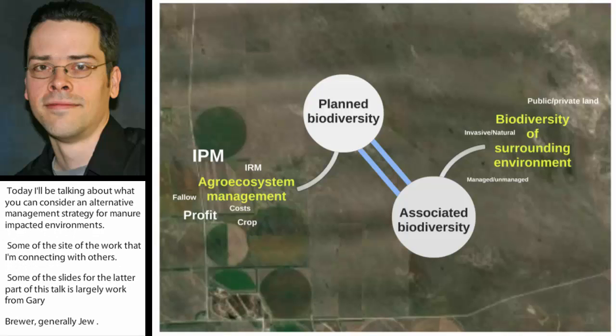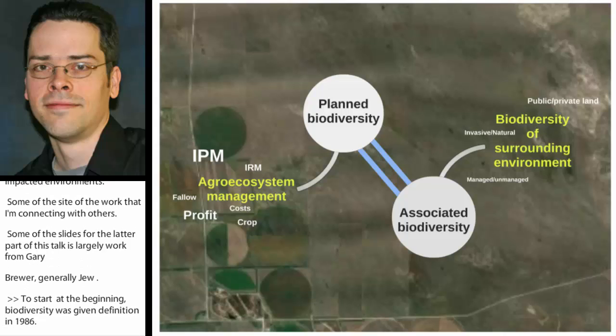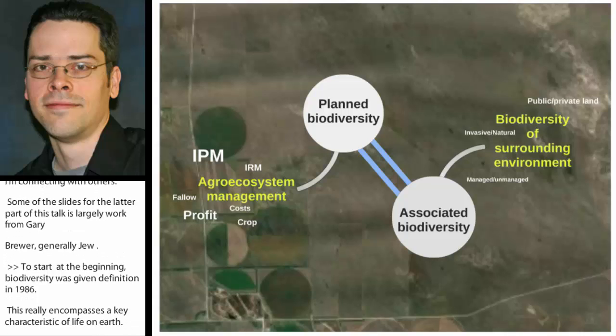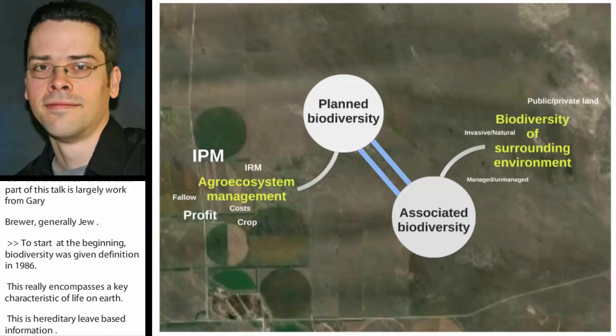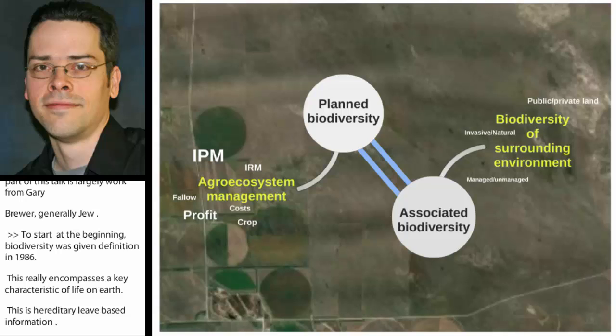Biodiversity was given a definition in 1986, and this really encompasses a key characteristic of life on earth, which is hereditarily based variation. At the species level, this is comprised of numerous life forms with various abundances, and most of these are arthropods.